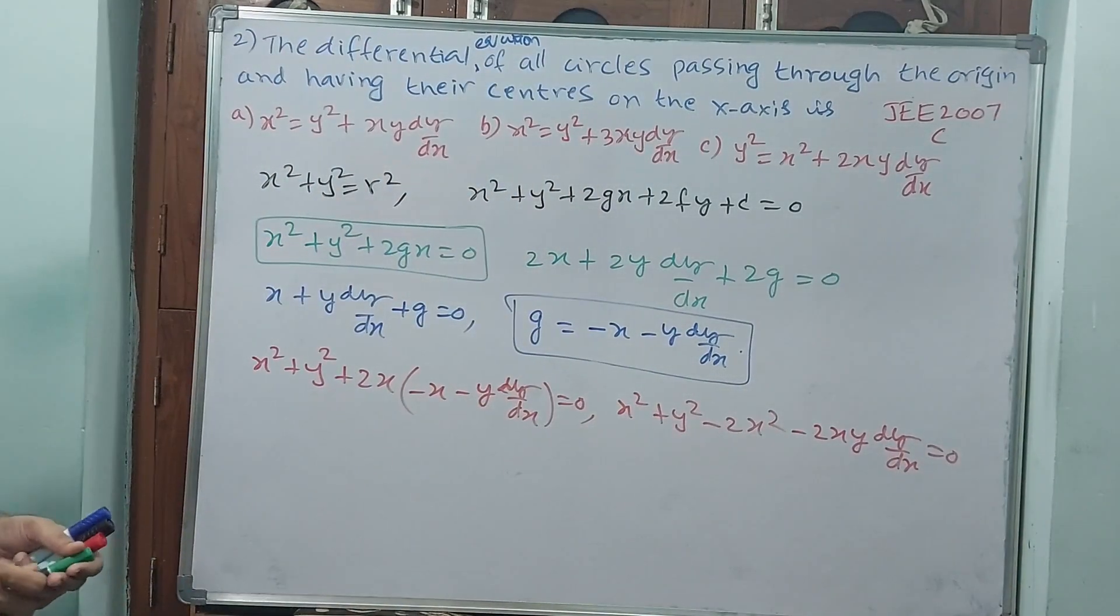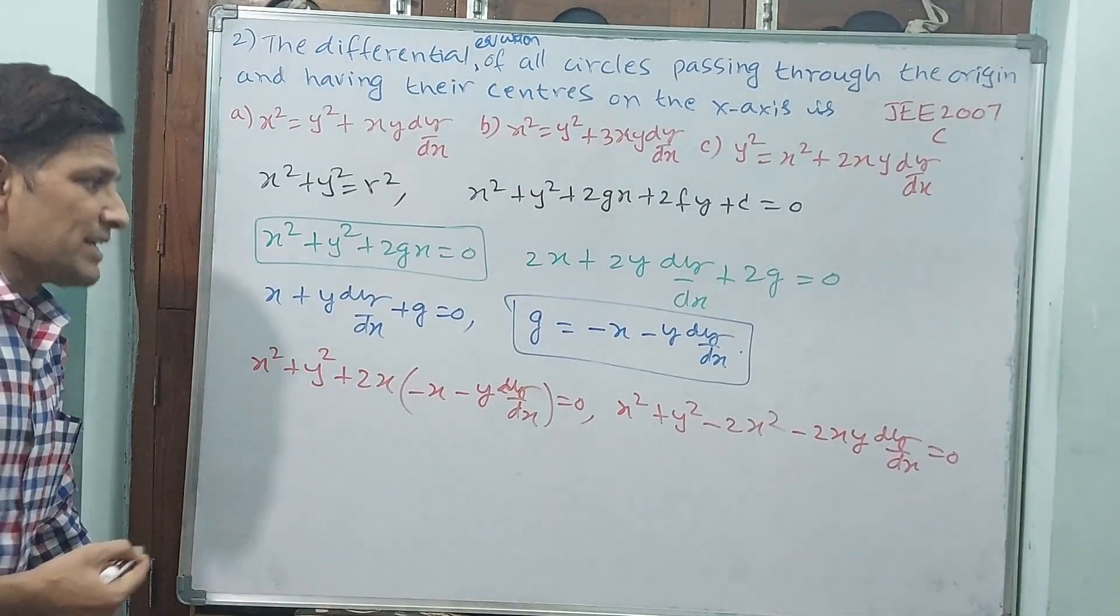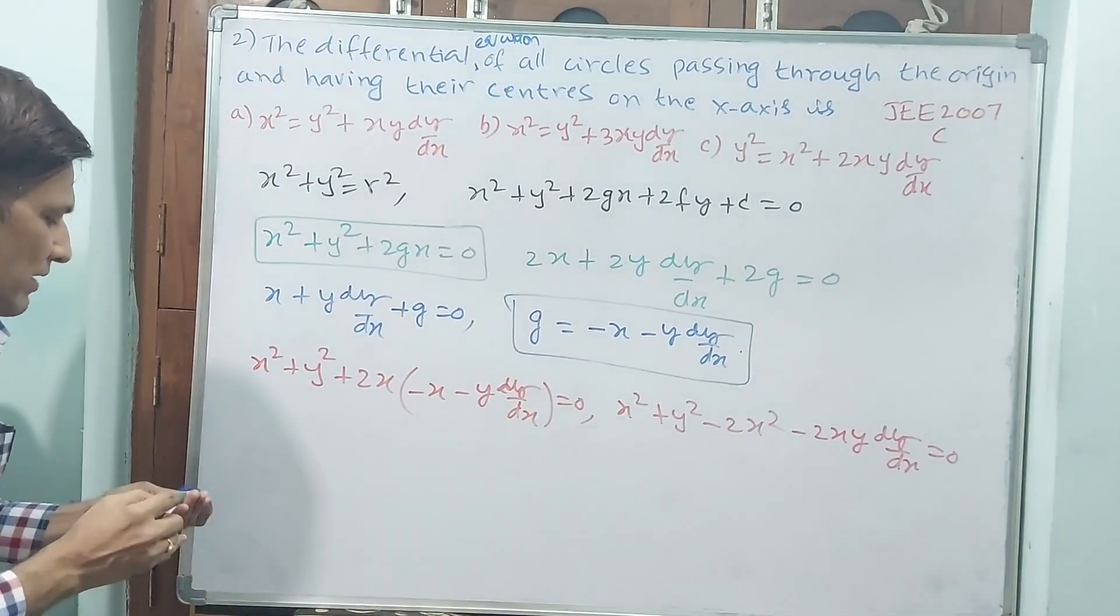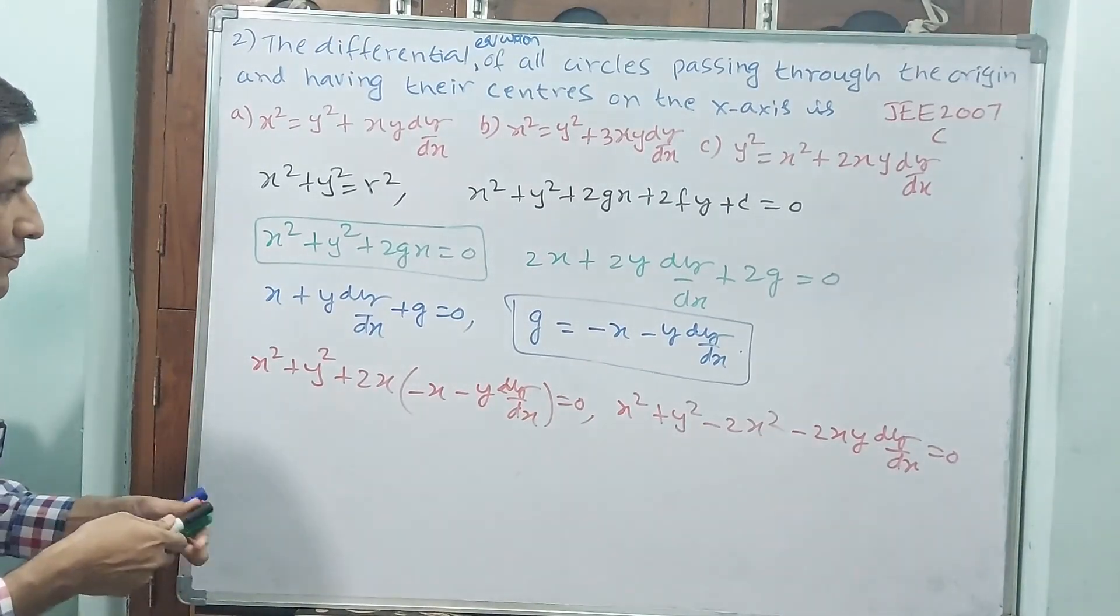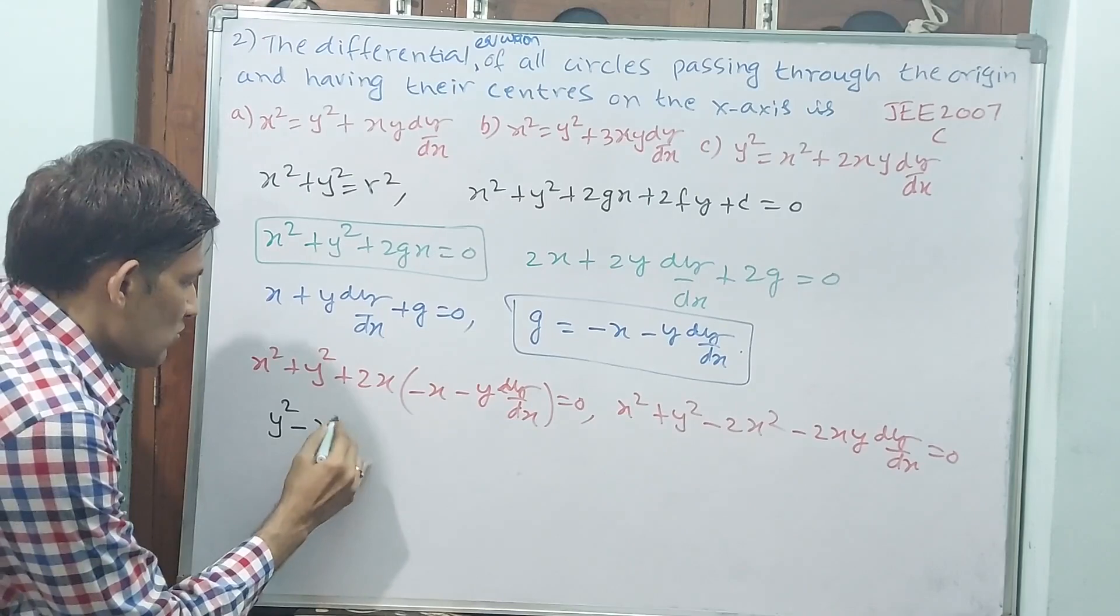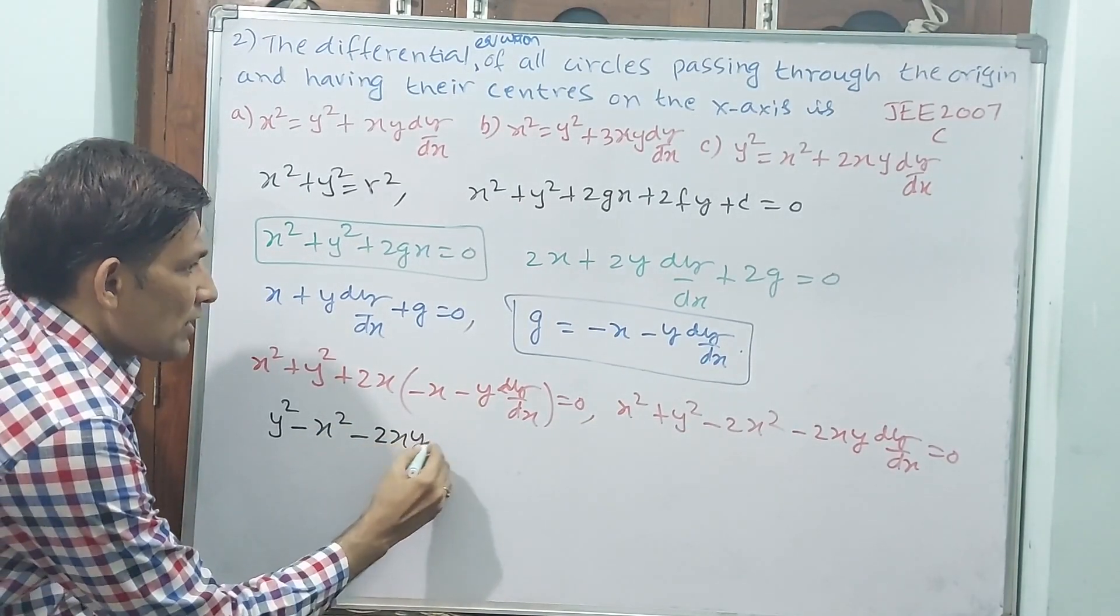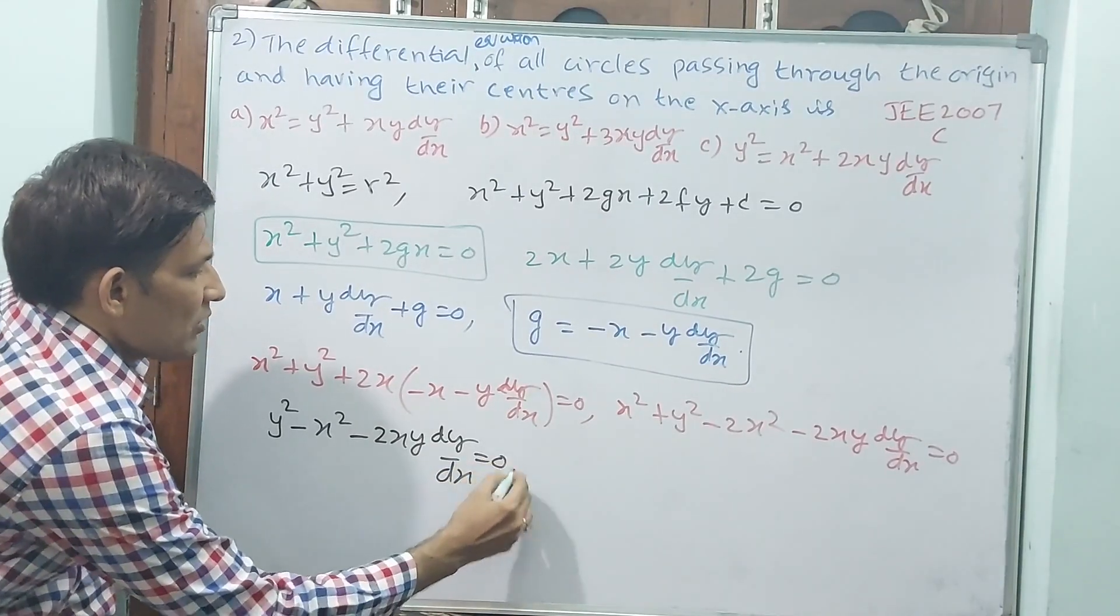Okay. Now, see x² minus 2x² is minus x². That means you write first y². Okay. Write down.